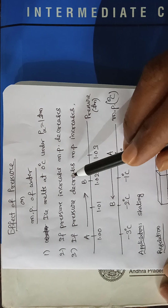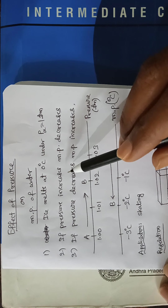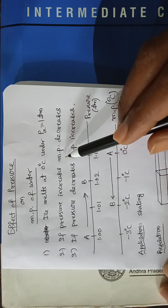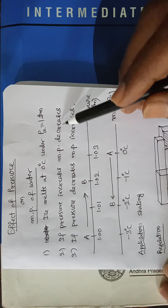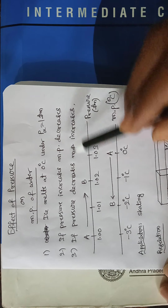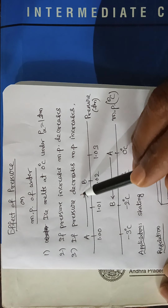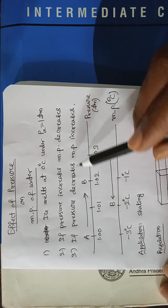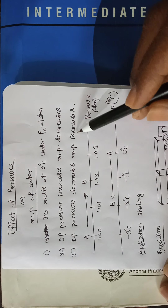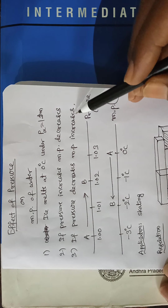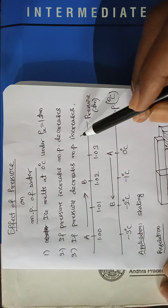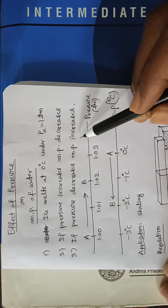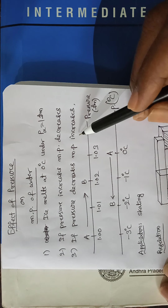But here, when pressure is increased, the melting point decreases. And when pressure is decreased, the melting point increases. So there is an inverse proportionality between pressure and melting point.